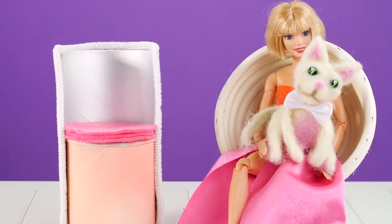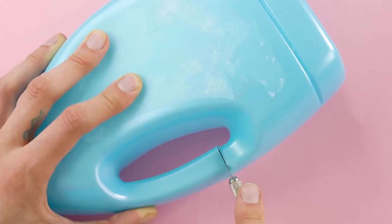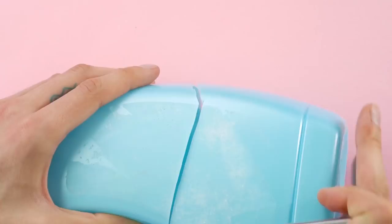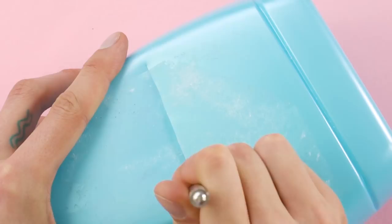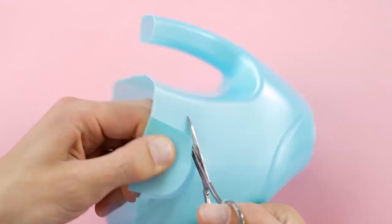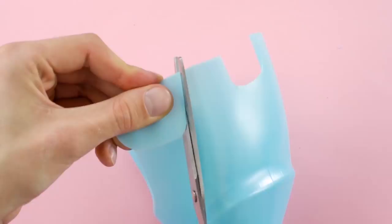Elephant. If Barbie wants a pet elephant, then that's what she shall have. Find an old plastic jug like this one. Cut off the top, the handle, and the bottom off. Then use scissors to form an elephant body like the one you see here. It already looks like an elephant, right?